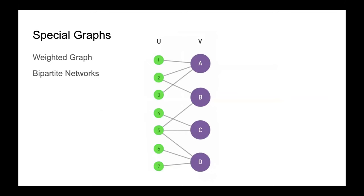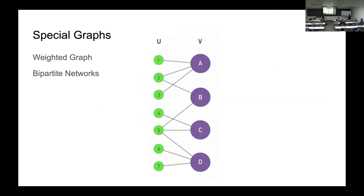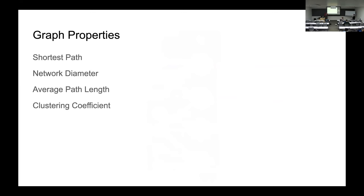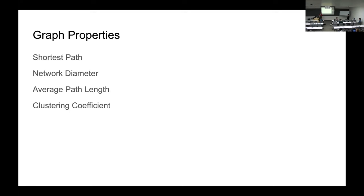There are different types of graphs — for example, a bipartite network where you can clearly see two different groups of nodes with no links inside each group, only links between different groups. There are also properties of a graph such as shortest path, network diameter (the longest shortest path), average path length, and clustering coefficient. All of those concepts from graph theory can be used to understand the network.